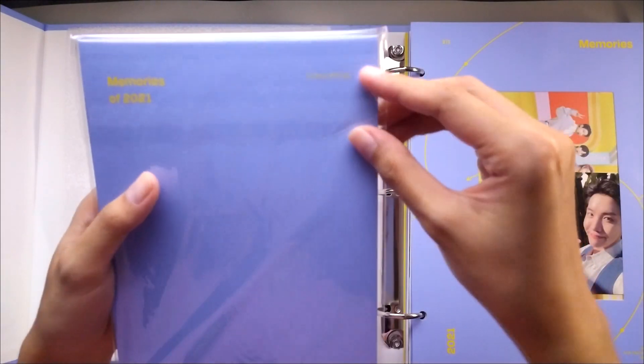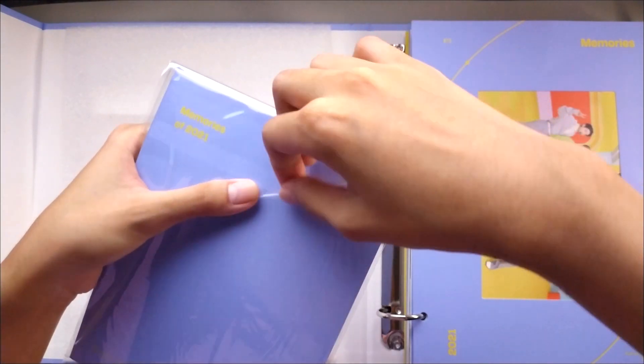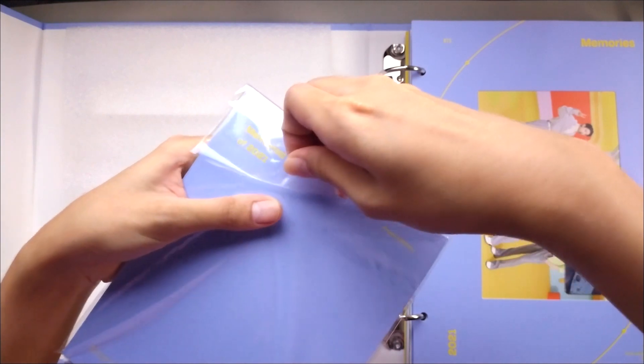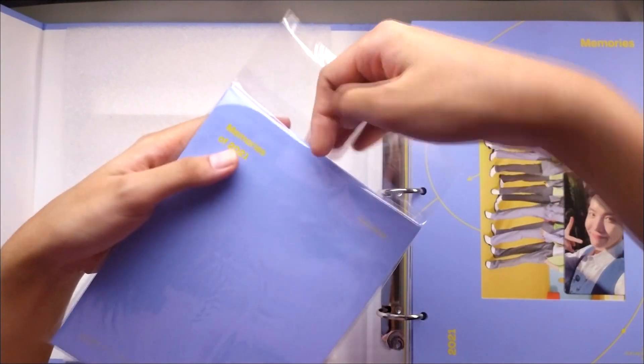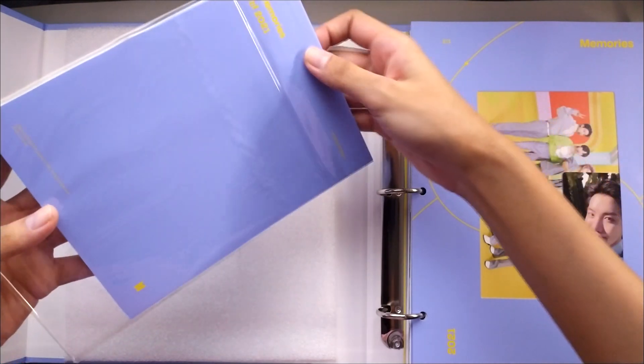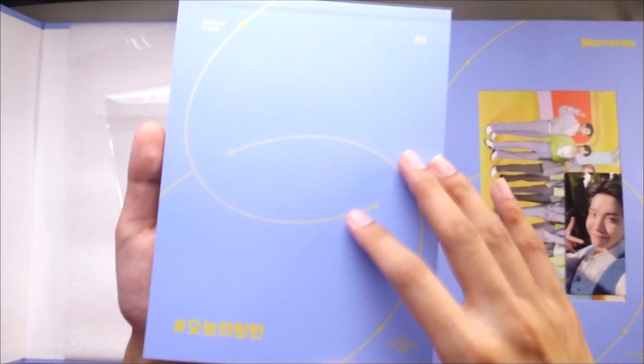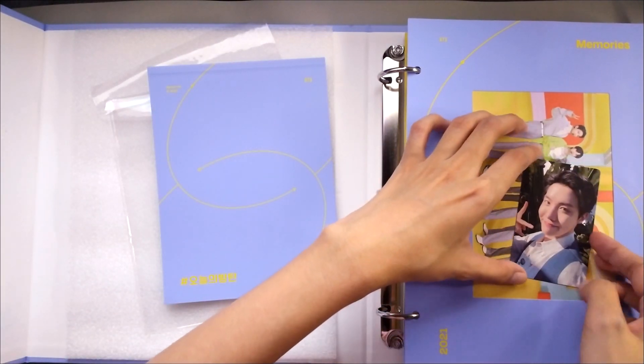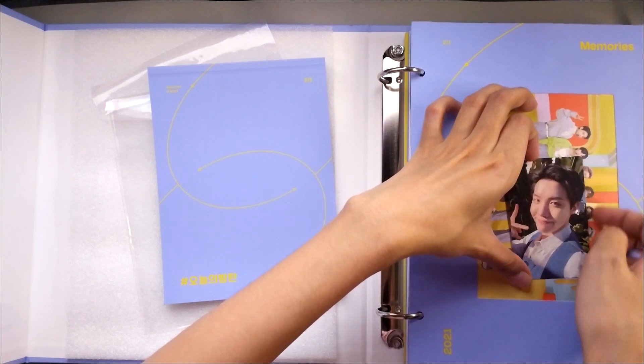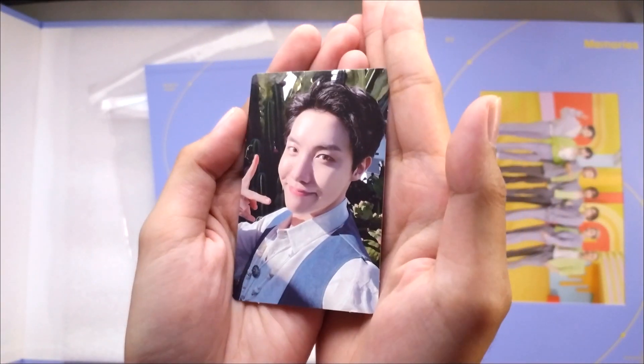Okay, this is the kind of like mini photobook, right? They had the same one in 2020. Oh, I got distracted. I got J-Hope. That's so cool. Look at him. It's so pretty.